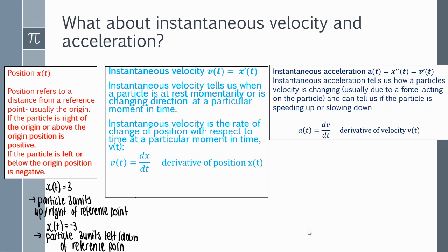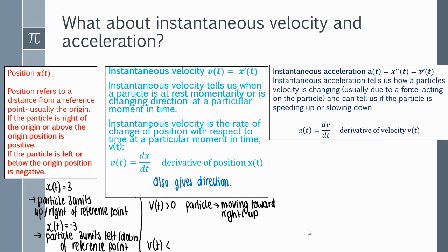Instantaneous velocity is given by the derivative of position. This can tell us when a particle is momentarily at rest or changing direction at a particular moment in time — both of which happen when velocity is zero. Instantaneous velocity is the rate of change of position with respect to time. Velocity can be positive or negative: if velocity is greater than zero, the particle is moving right or upward; if velocity is less than zero, the particle is moving in the negative direction, left or downward; and if velocity is zero, the particle is momentarily at rest or changing direction.